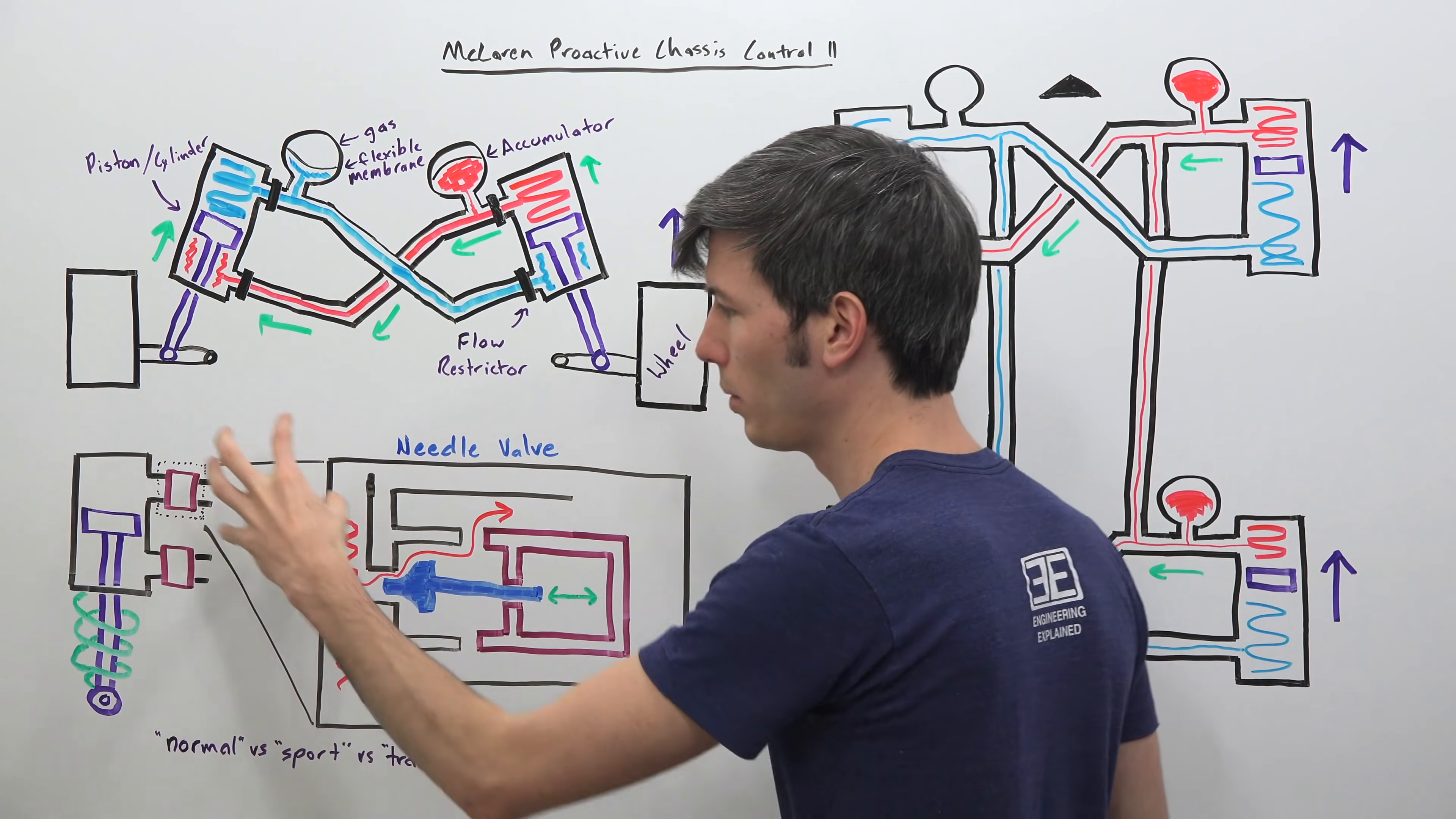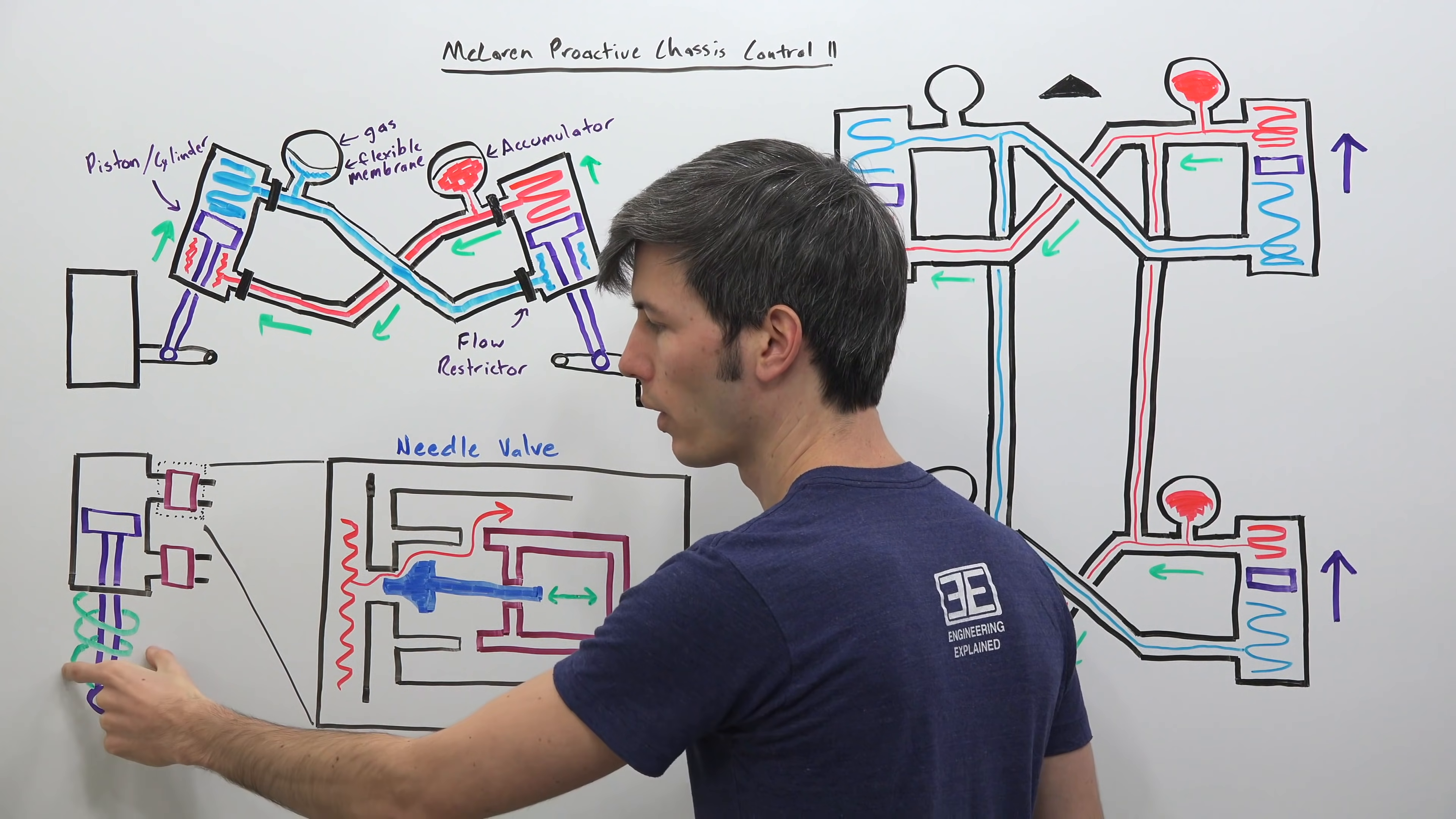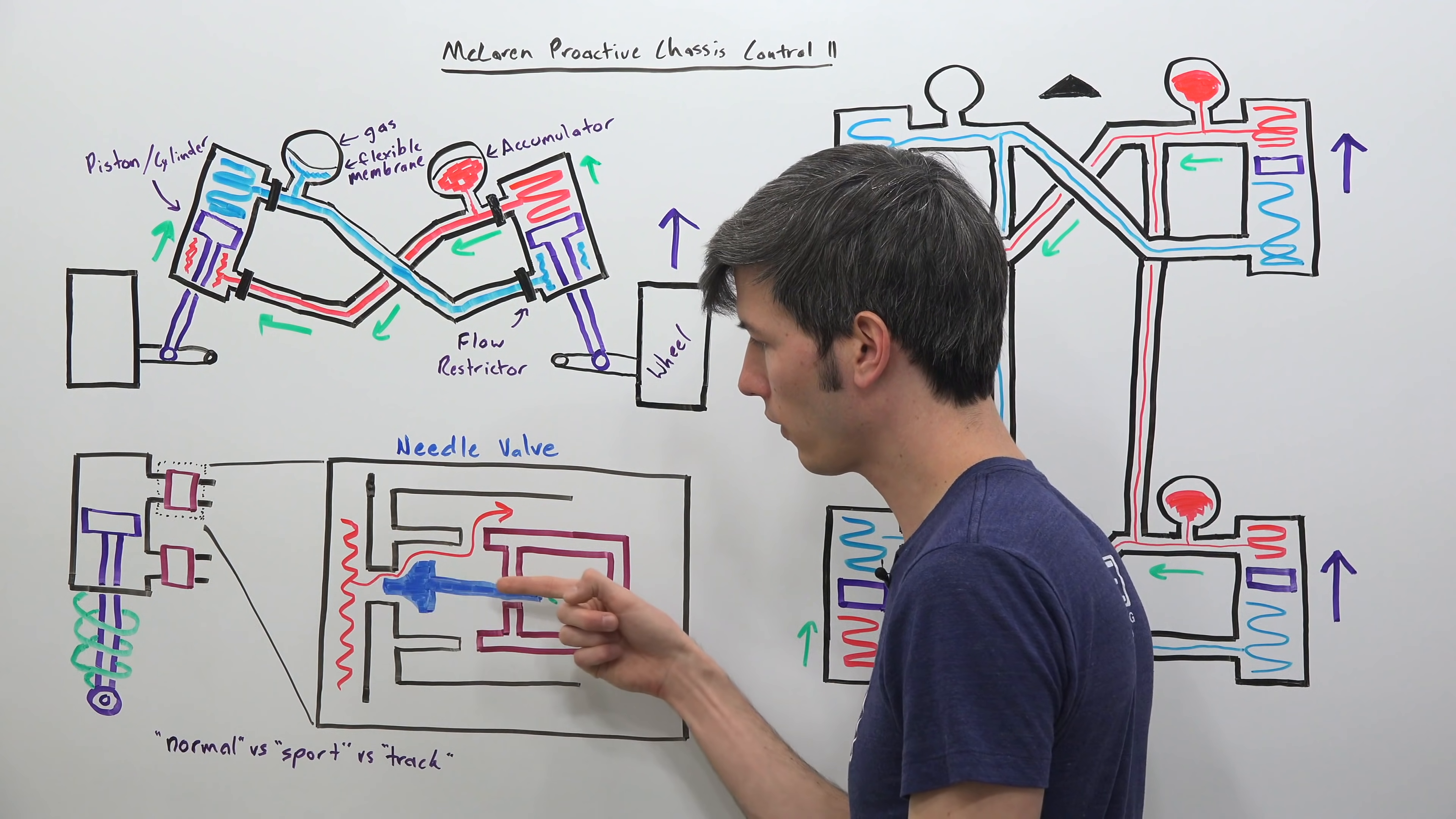So McLaren will change the position of this needle valve. So we're looking at kind of a zoomed in look on one of these flow restrictors. Here's our setup right here, we've got our cylinder, our damper and regular old coil spring attached to the lower control arm there.